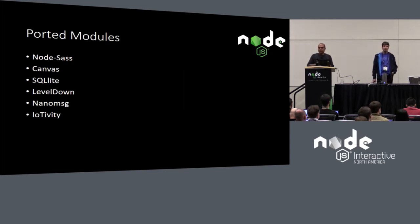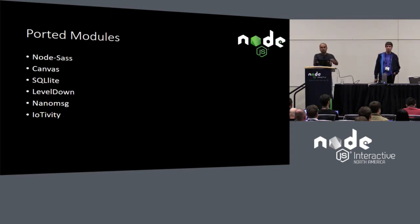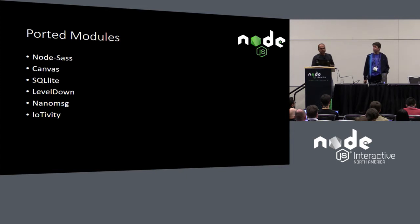While we were working on designing these ABI-stable APIs, we looked at popular modules to understand the surface that needed to be abstracted out.